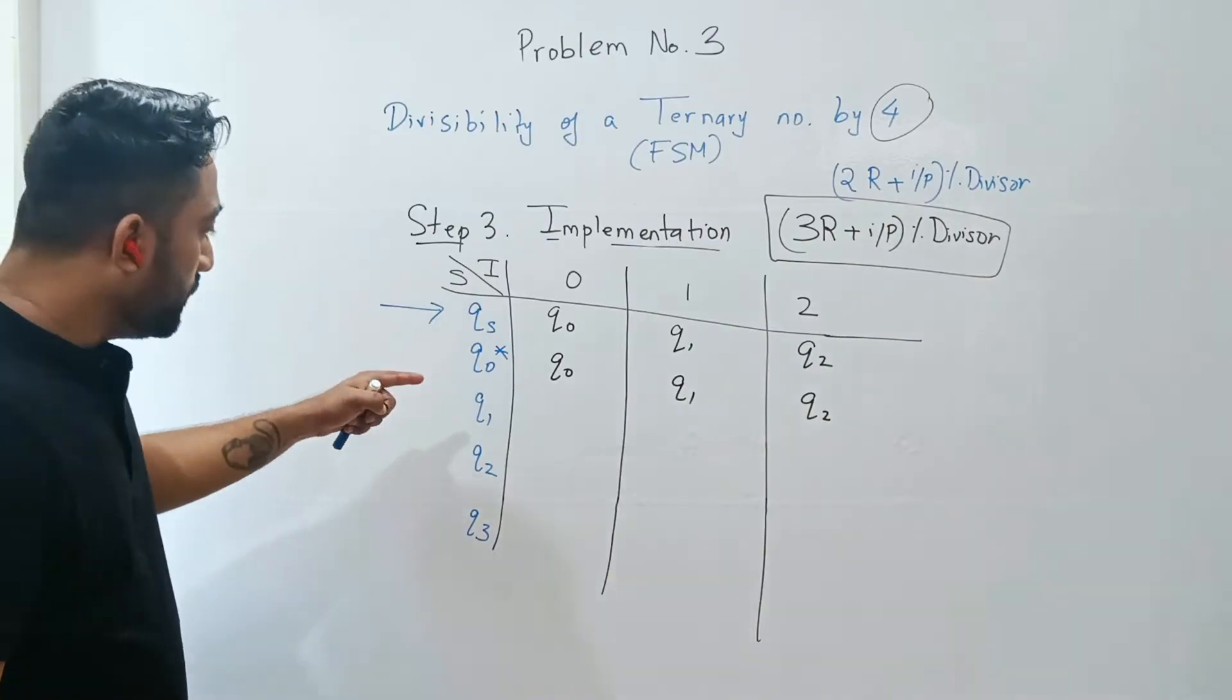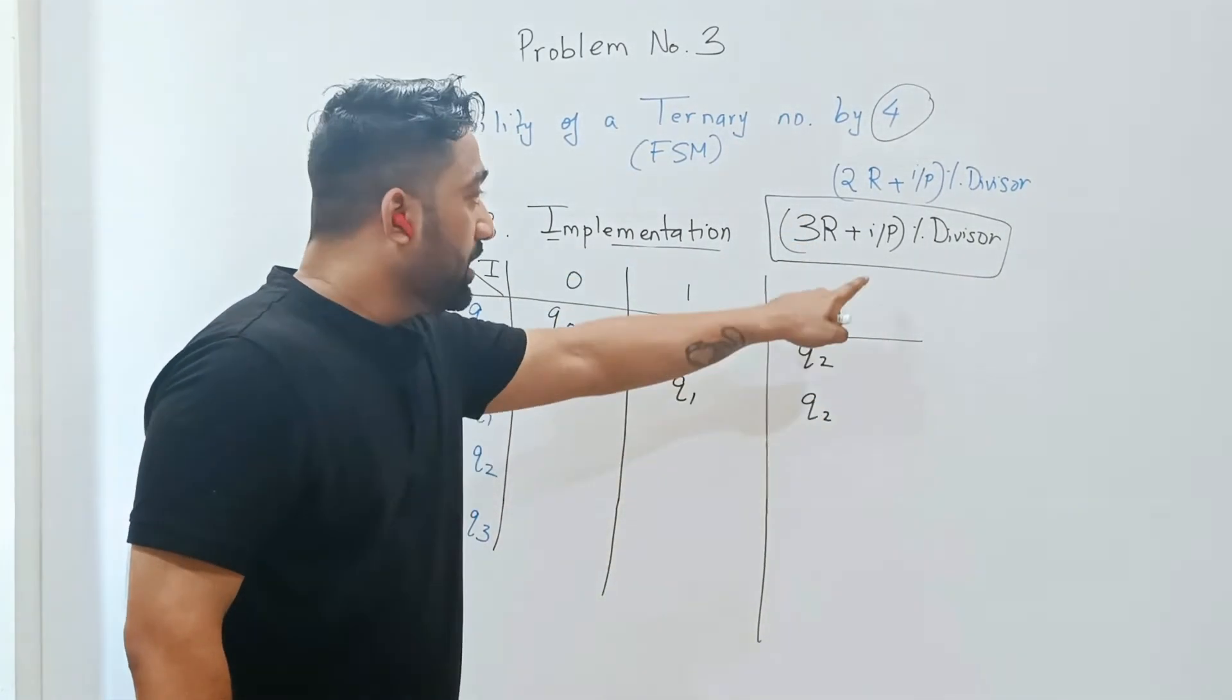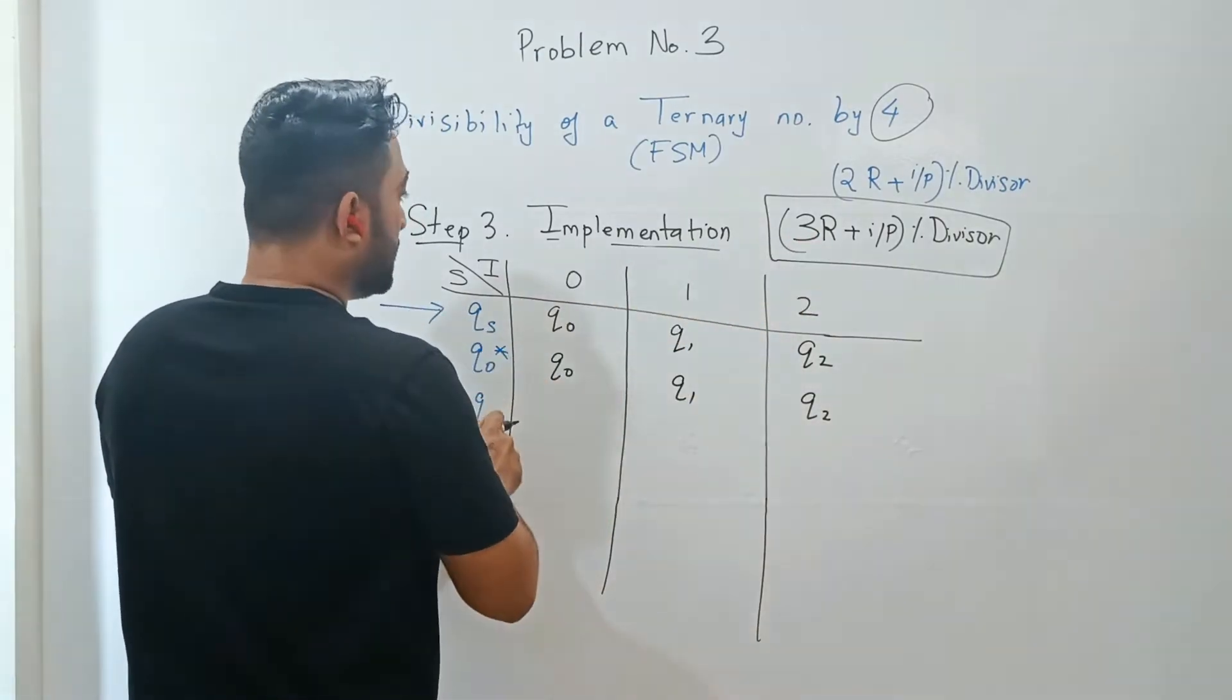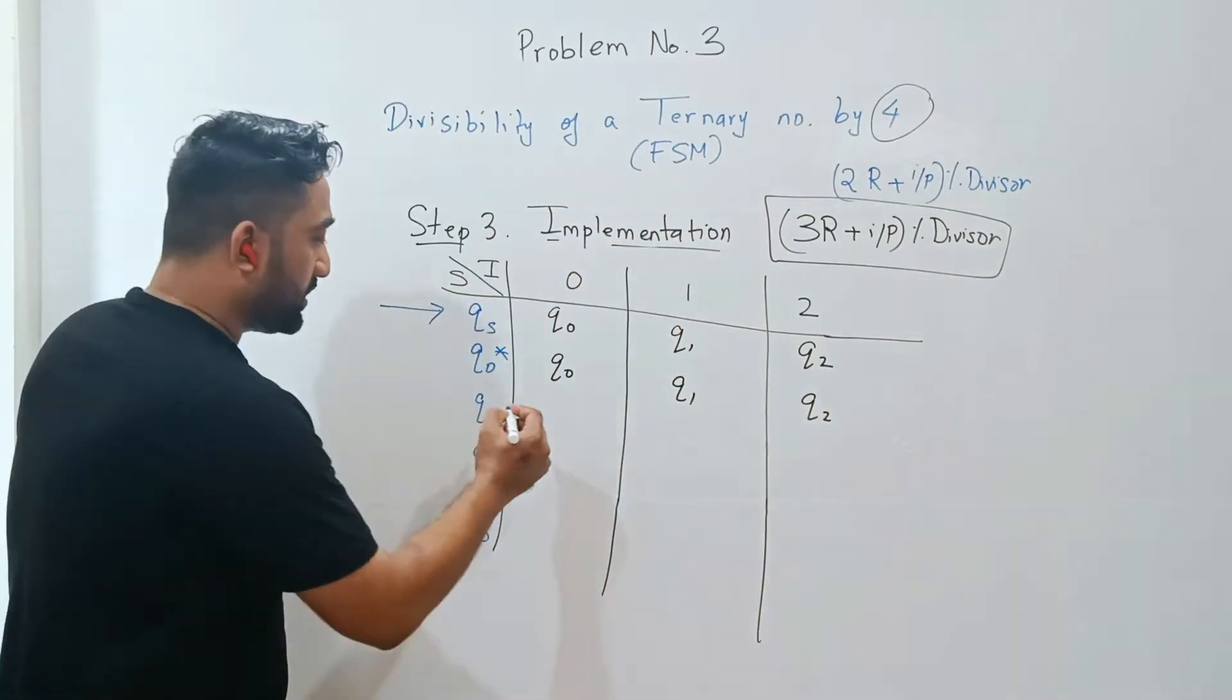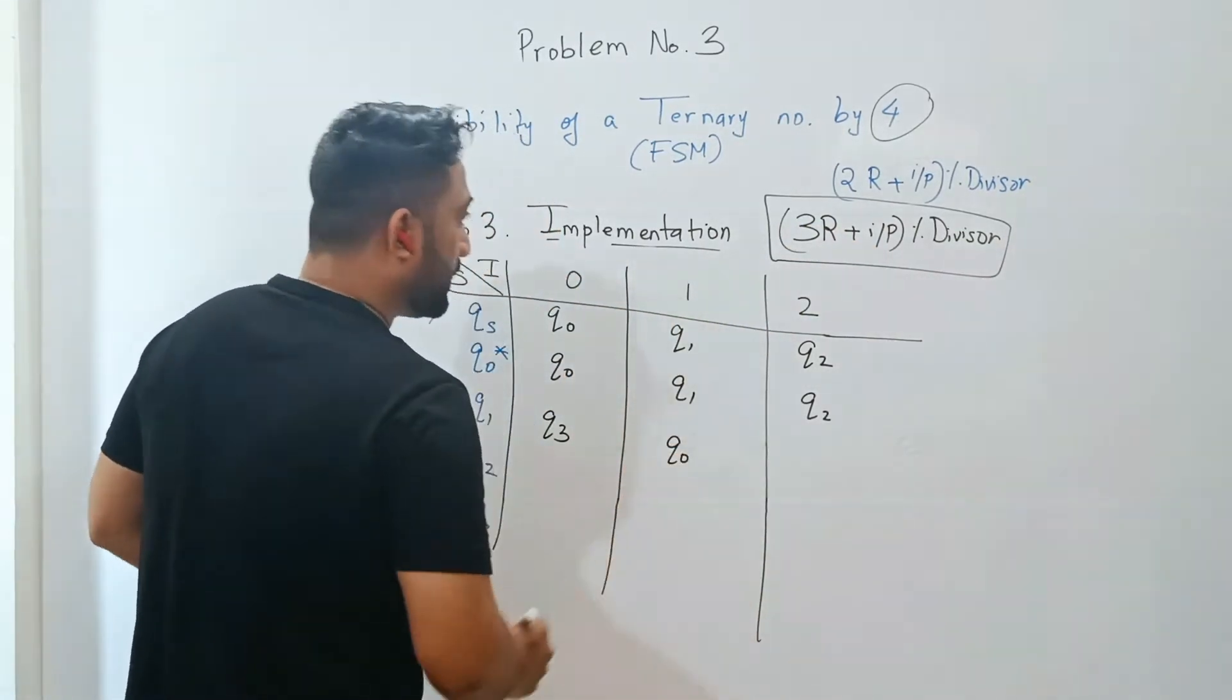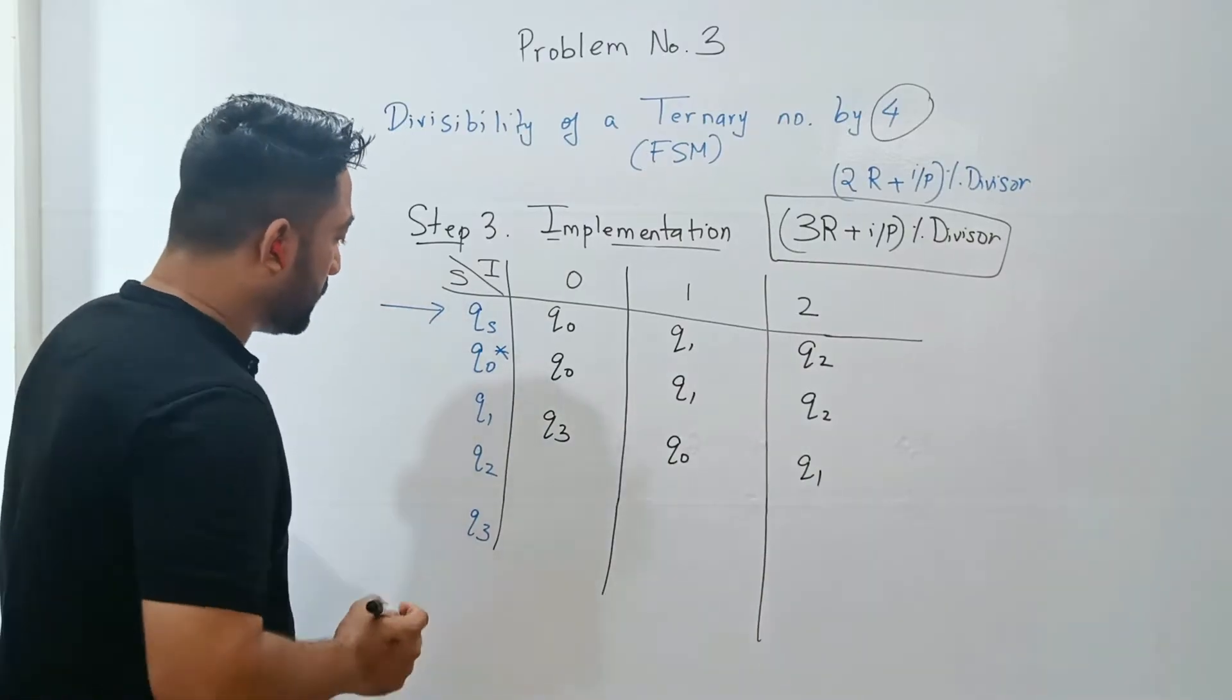Now q1. For q1, the remainder r value is 1. If I put this value, it becomes 3 times 1, which is 3, plus input is 0. So 3 plus 0 mod 4 is q3. Similarly, 3 plus 1 becomes 4, 4 mod 4 is q0. Then 3 plus 2, that's 5, 5 mod 4 is 1, that's q1. With the same logic, complete this table.